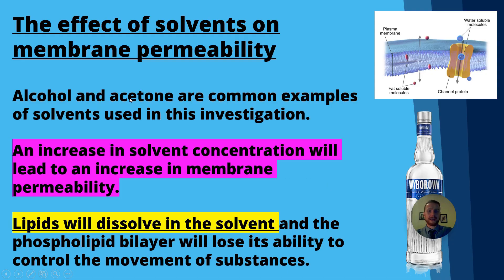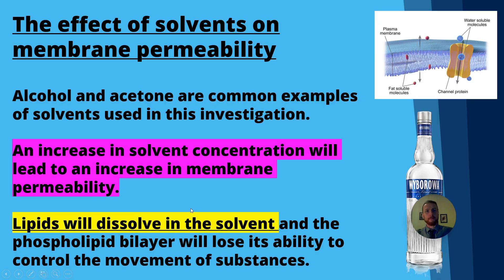Solvents such as alcohol and acetone — commonly known as nail polish remover — are common examples you could use to investigate this. An increase in solvent concentration will lead to an increase in membrane permeability. Lipids dissolve in the solvent and the phospholipid bilayer loses its ability to control the movement of substances, so more concentrated solvent means greater permeability.